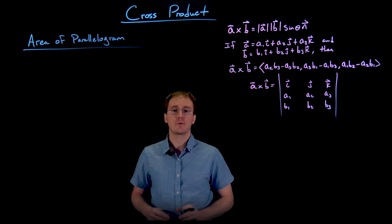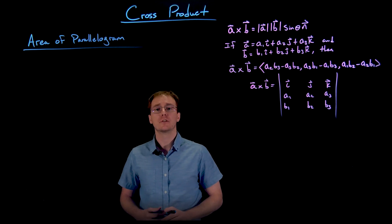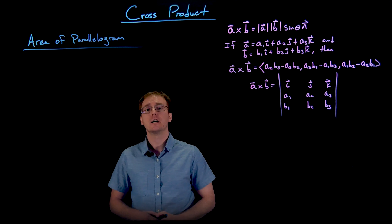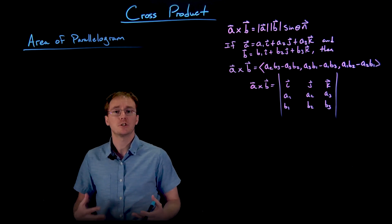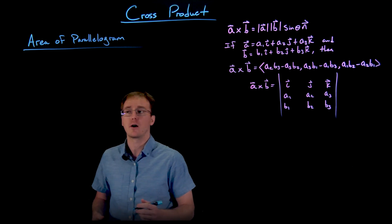and that's how we can use the cross product, or really the magnitude of the cross product, to find the area of a parallelogram. And so this is giving us another geometric interpretation of the cross product or the magnitude of the cross product.